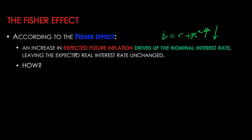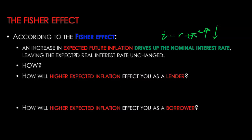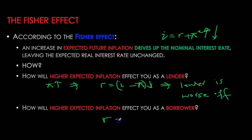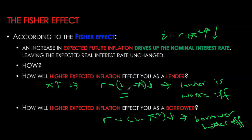To confirm this using our demand-supply framework, consider how higher expected inflation affects lenders and borrowers. Recall that when inflation rises, holding everything else constant, it causes the real interest rate to go down. Since real interest rate is the payoff to the lender, the lender is actually worse off. For the borrower, real interest rate is the real cost of borrowing; higher inflation reduces the real cost, making the borrower better off. Therefore, at any given nominal interest rate, higher inflation causes supply of loanable funds to decrease — lenders are worse off — while demand for loanable funds increases, as real borrowing costs fall.